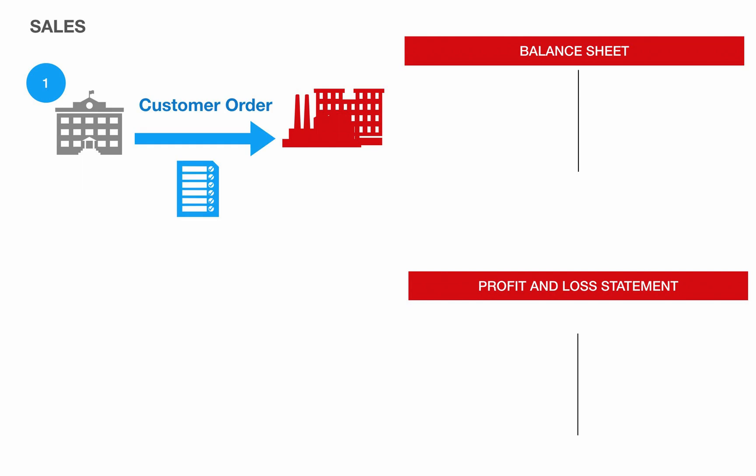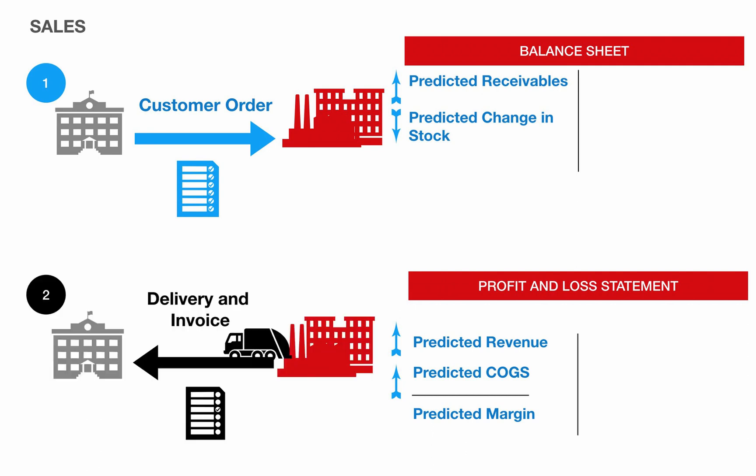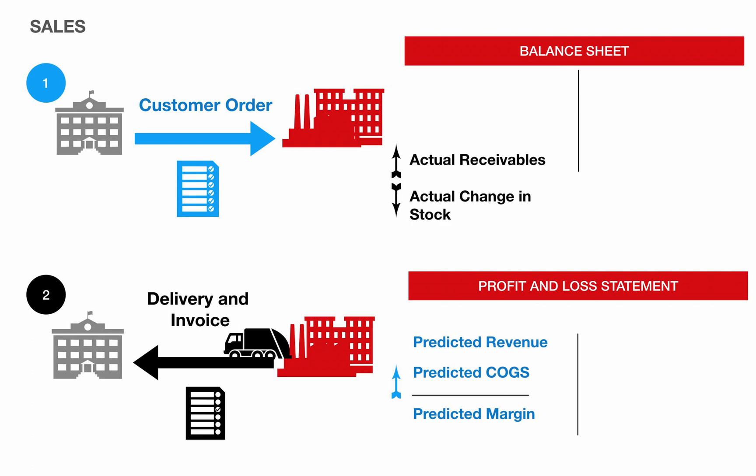When a sales order is created, the system can predict that the ordered goods will be delivered and invoiced on the dates specified in the sales order items. The values expected from the invoice and delivery — account receivables, change in stock, revenue and cost of goods sold — are stored as predicted values for the expected invoicing date. When a delivery and an invoice are posted for a sales order item, the predicted values become actual values.